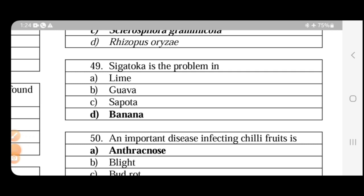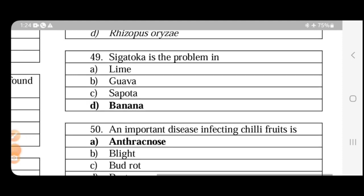Sigatoka is a problem in banana. The scientific name is Mycosphaerella musicola. This causes elliptical spots in leaves and grayish appearance surrounded by yellow halo. Maximum defoliation of leaves is the major symptom.